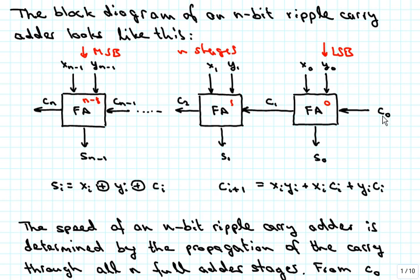We have the carry input to each of those full adders and the carry output. So we have c0 going into the first block, c1 coming out of the first block, then c1 being the input to the next block, c2 coming out of this block, and the last block has input c sub n minus 1 and output c sub n. What basically determines the speed at which we can do addition is how long it takes from the right side to the left side, in the worst case, in order to compute the sum s sub n minus 1 and the carry output c sub n.